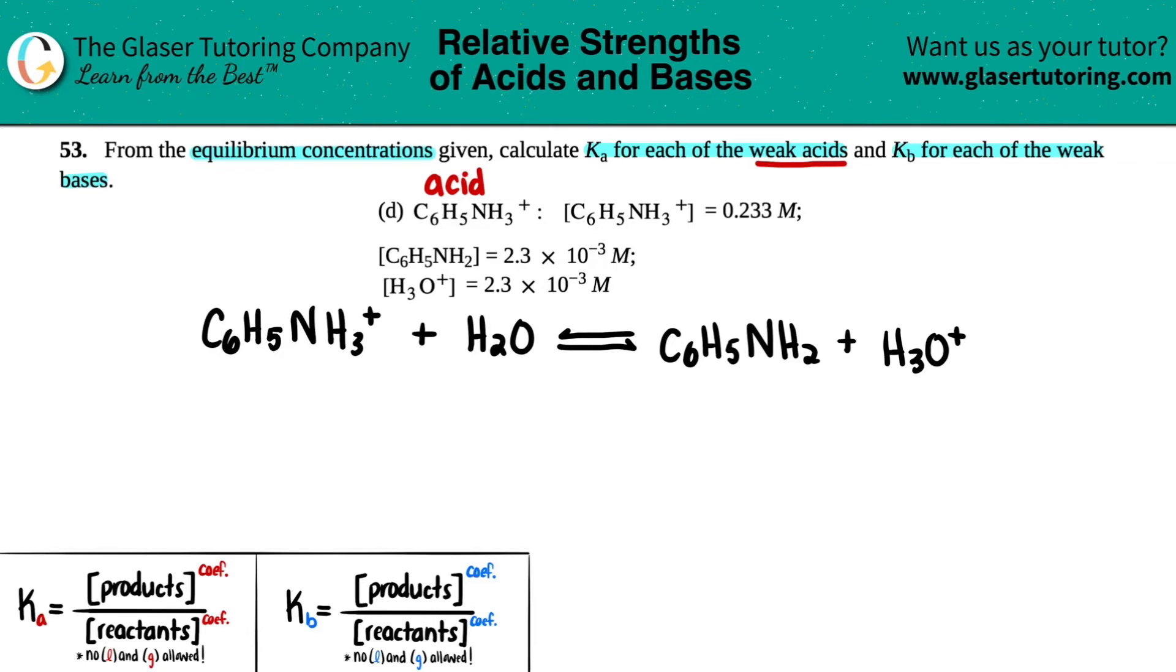Now what I'm going to do is I'm just going to write out the concentrations that I have of each. So for my starting material, I got 0.233 molarity. And then for both products, I have the same molarity, 2.3 times 10 to the negative third molarity. Now the question is, why didn't they give me a molarity for water? Well, remember, water is a liquid.